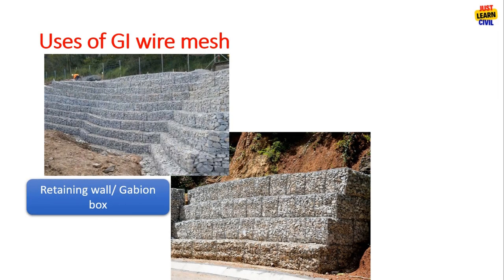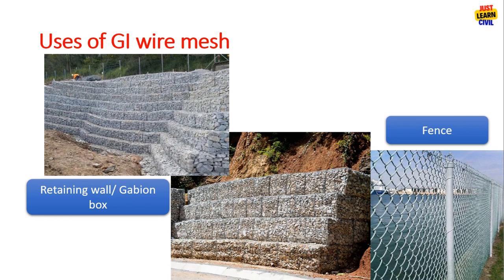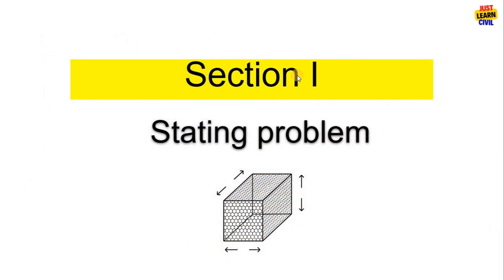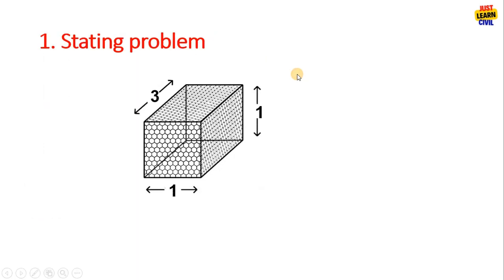GI wire mesh is used in gabion box retaining walls and also used in fencing. First let us understand the scenario. We have a gabion box here with dimensions 3 meter length, 1 meter width and 1 meter height.